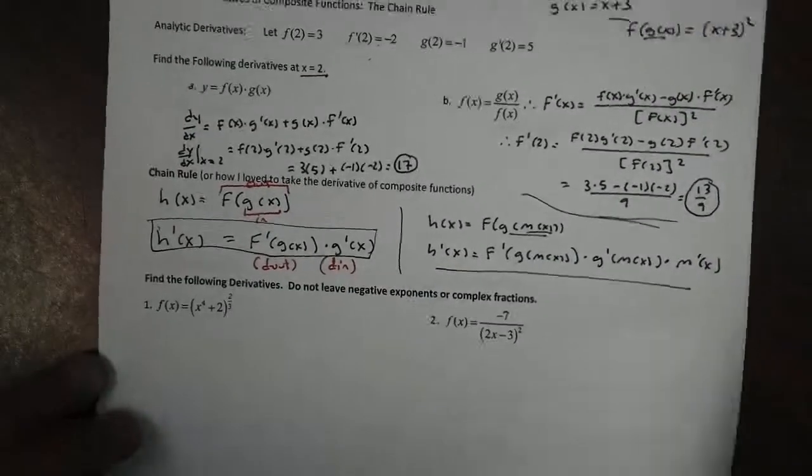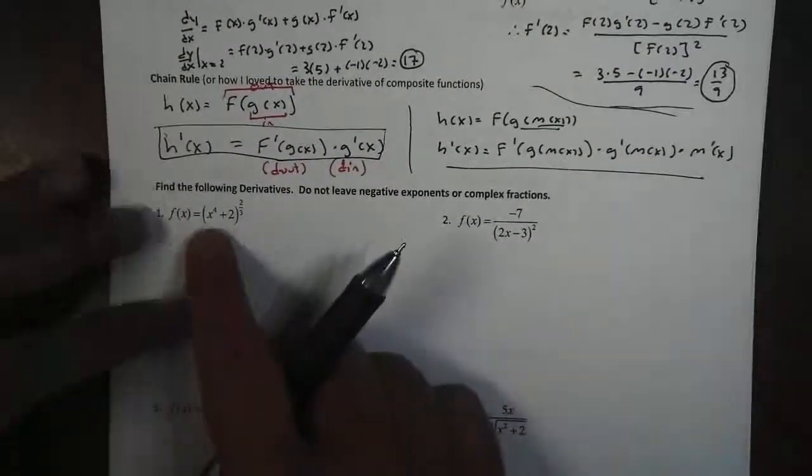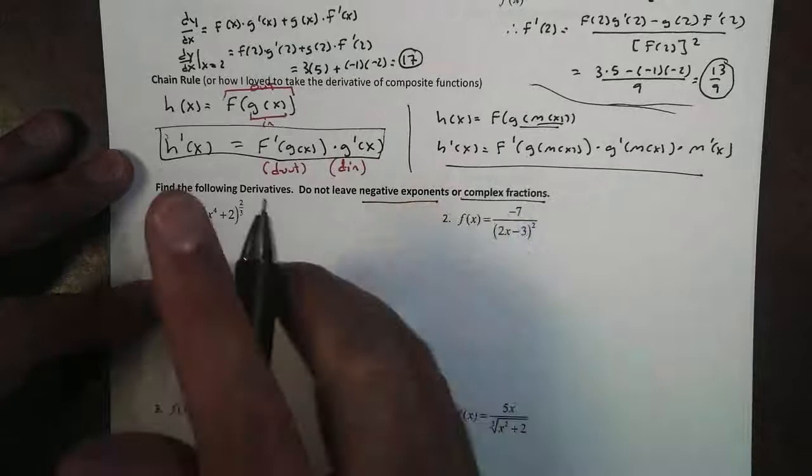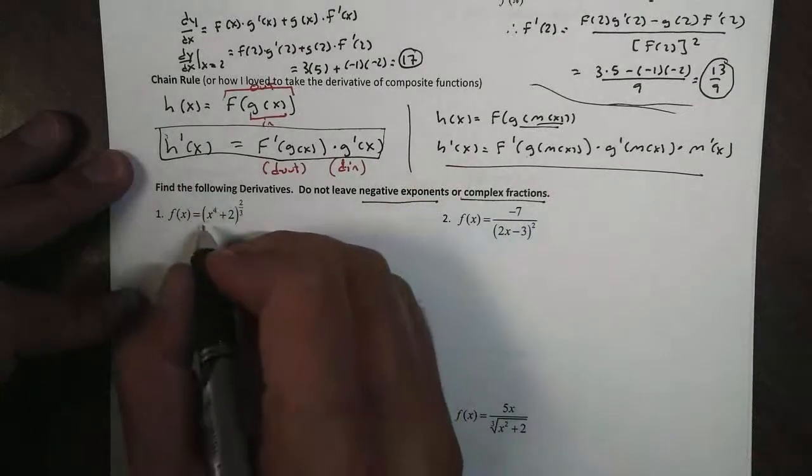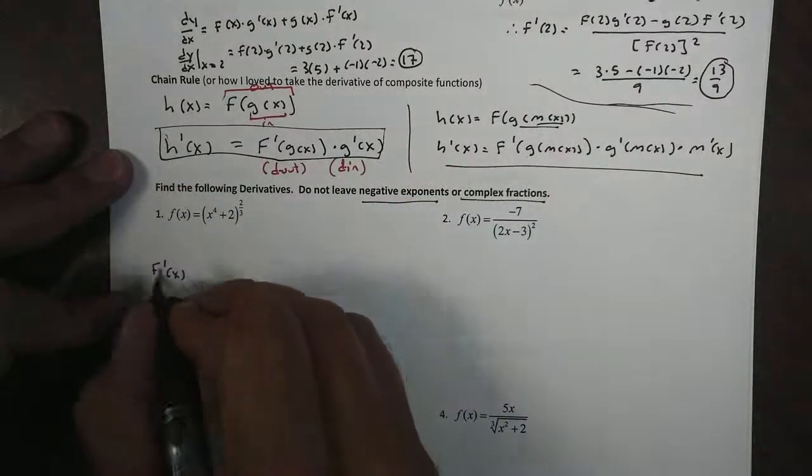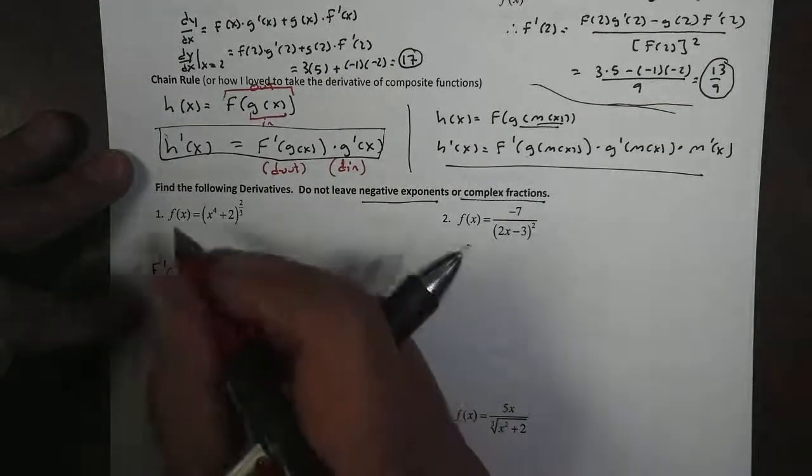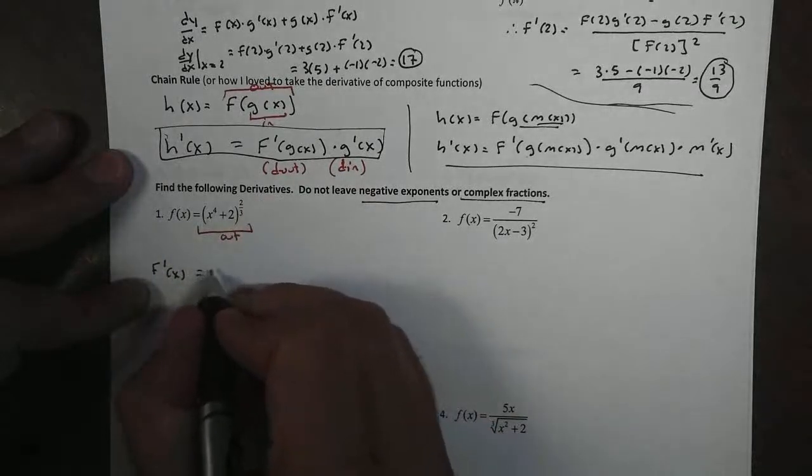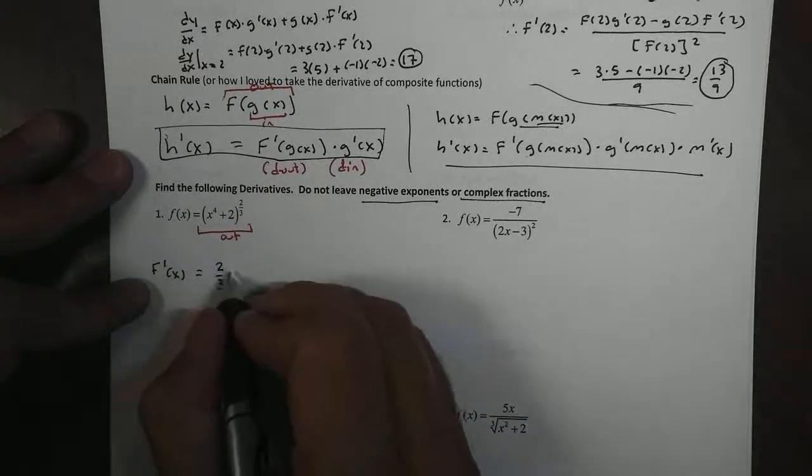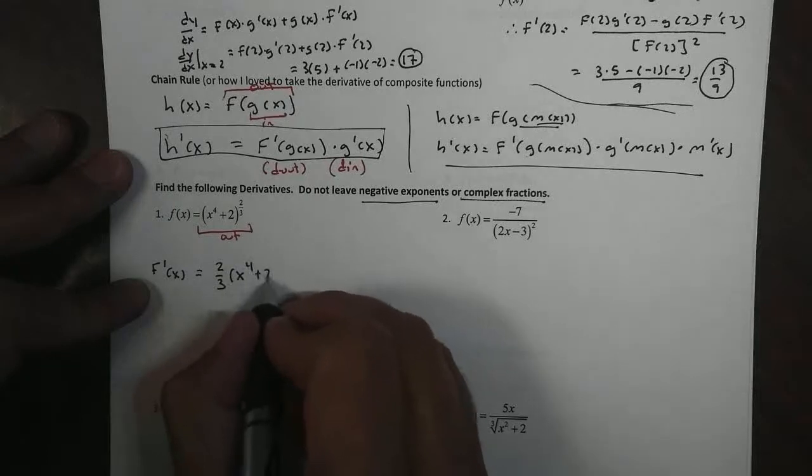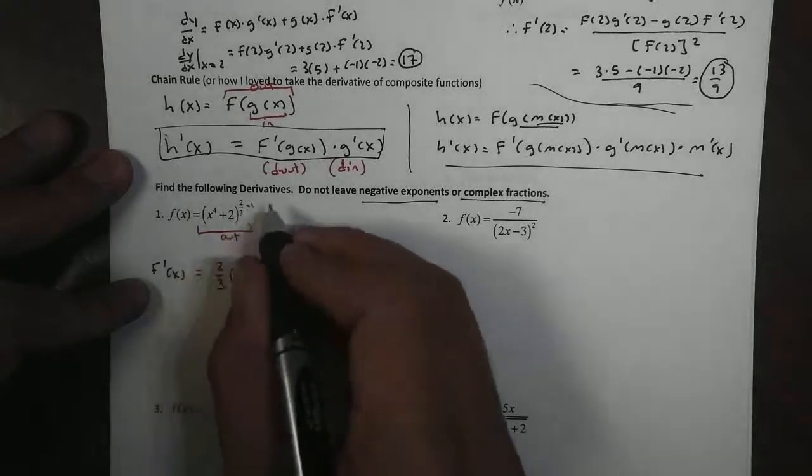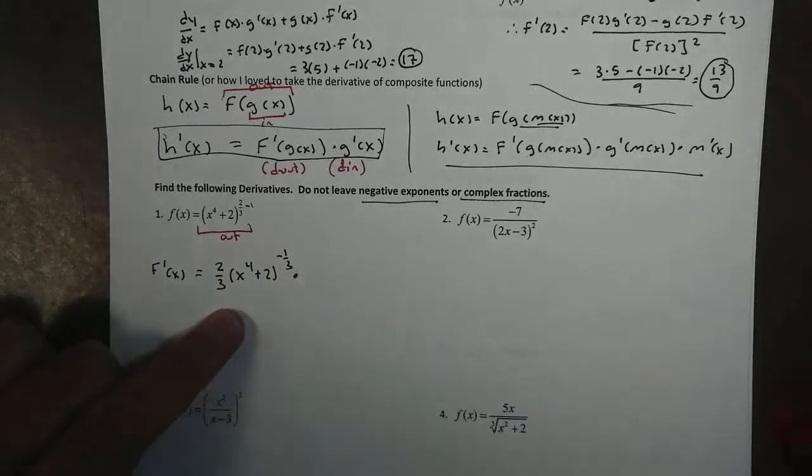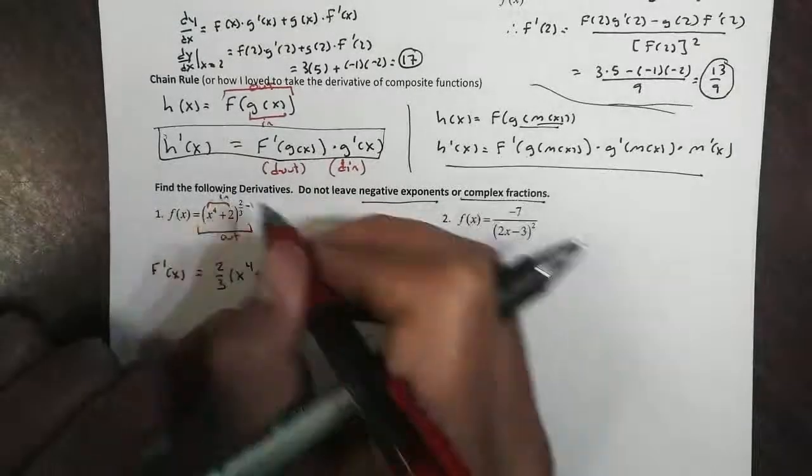So let's take a look at a few examples here. Find the following derivatives. Remember, no negative exponents or complex fractions. It's the only thing we don't like to have. So for number one, if I want to take this function's derivative, f'(x), when I look at it, I have my outside function, which is this two-thirds power. So the derivative will become two-thirds. This is just power rule. The inside, remember, stays the same. Subtract one, because it's my power rule, negative one-third. Ooh, I got a negative power there.